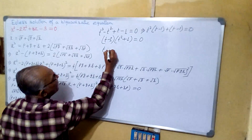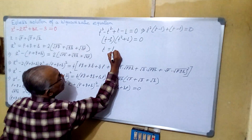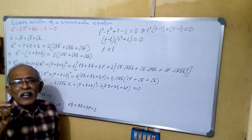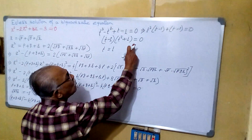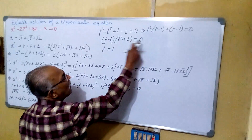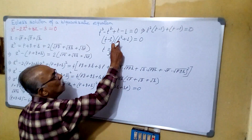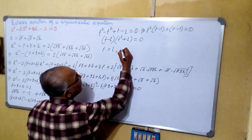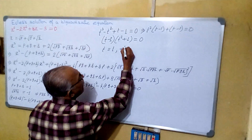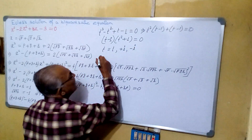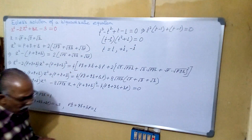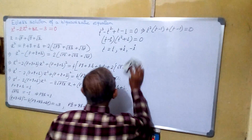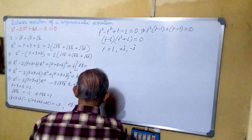From here what we are getting: T equals to 1, and from T squared plus 1 equals to 0, T squared equals to minus 1. Minus 1 is i squared, so T squared equals to i squared, giving T equals to plus or minus i. So the three values are T equals 1, plus i, and minus i. Now we will proceed further with these values.